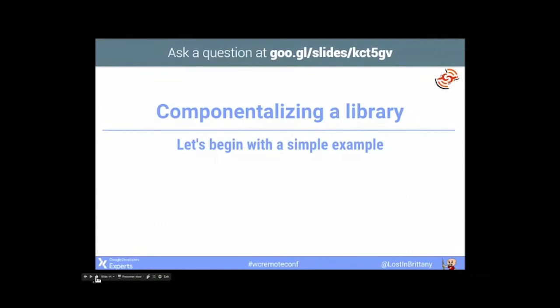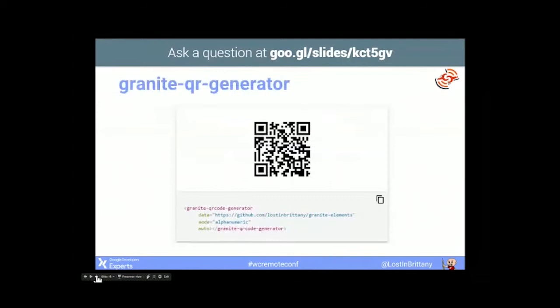You can do exactly the same thing using any other component library — Skate, Brick, or vanilla web components. It's the same way to structure things in order to wrap your library. For the example, I have taken a true use case: I needed a QR code generator. I needed to be able to generate on the fly a QR code in my application, and when the data changes, the QR code needs to change.